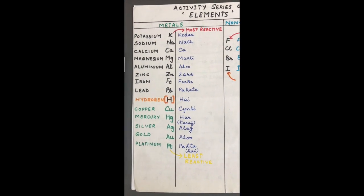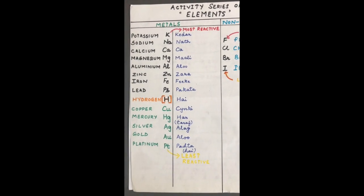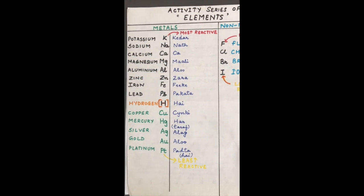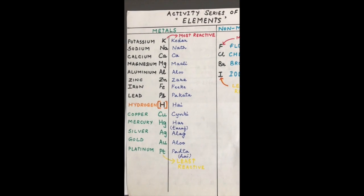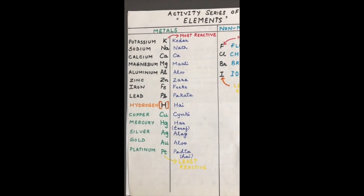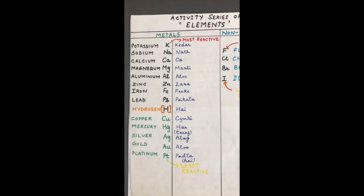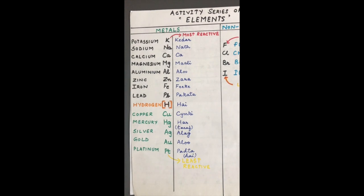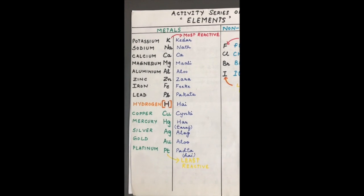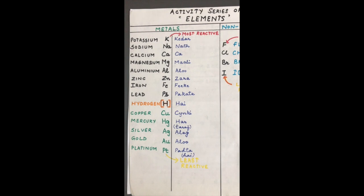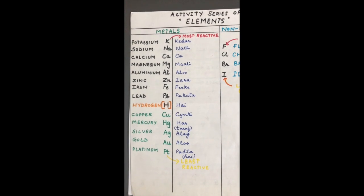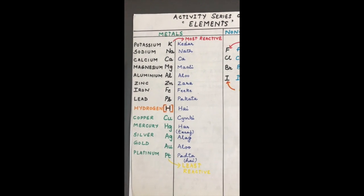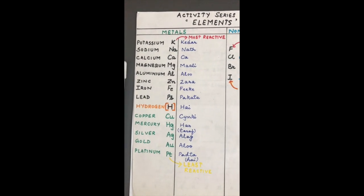Potassium being very reactive — this series is very helpful in understanding displacement reactions. Potassium, being very reactive, if made to react with any other salt solution, acids, or water, will always displace a metal which is below it in the activity series. We will understand this when we study displacement reactions. But first, let us see why hydrogen is included in this series though it is a nonmetal.